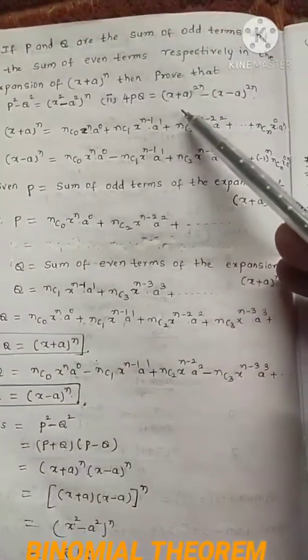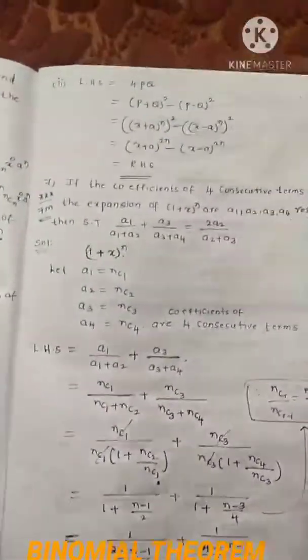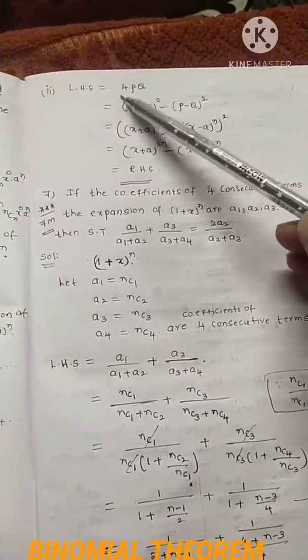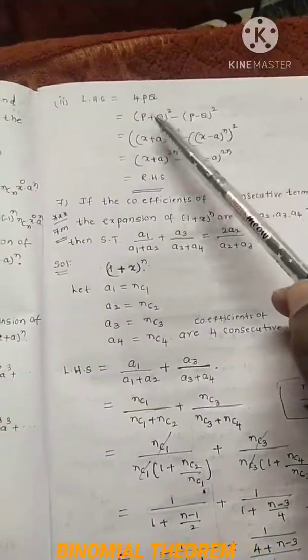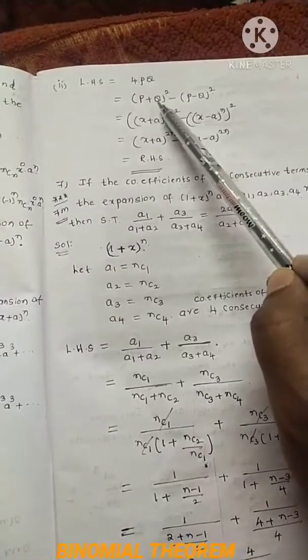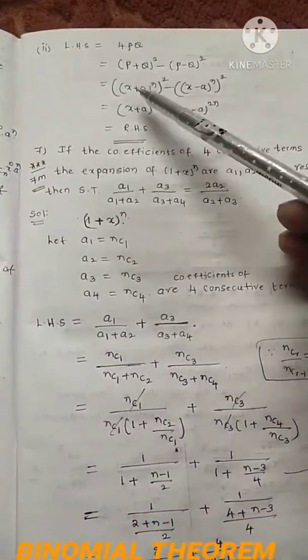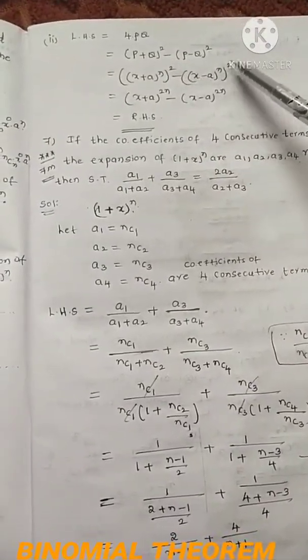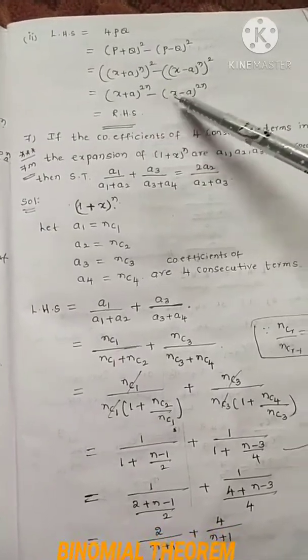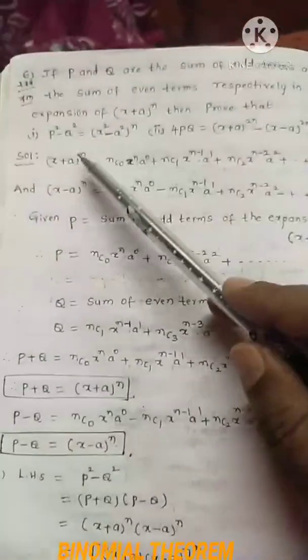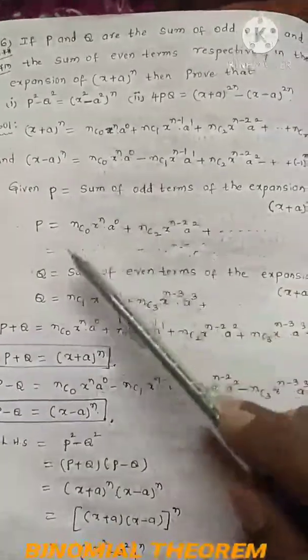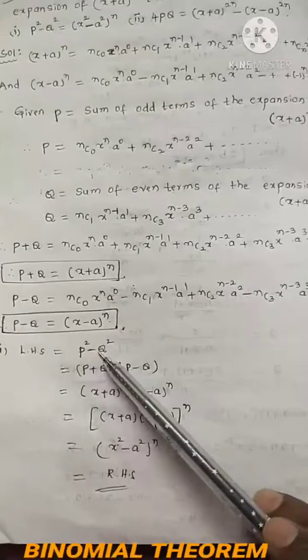For the second proof: 4pq = (x+a)^(2n) - (x-a)^(2n). LHS = 4pq. We know that 4ab = (a+b)² - (a-b)². So 4pq = (p+q)² - (p-q)². Substituting: (p+q)² = [(x+a)ⁿ]² = (x+a)^(2n) and (p-q)² = [(x-a)ⁿ]² = (x-a)^(2n). Therefore 4pq = (x+a)^(2n) - (x-a)^(2n). This completes the second proof. It is a simple question once you write the series, identify odd and even terms, and apply the algebraic identity.